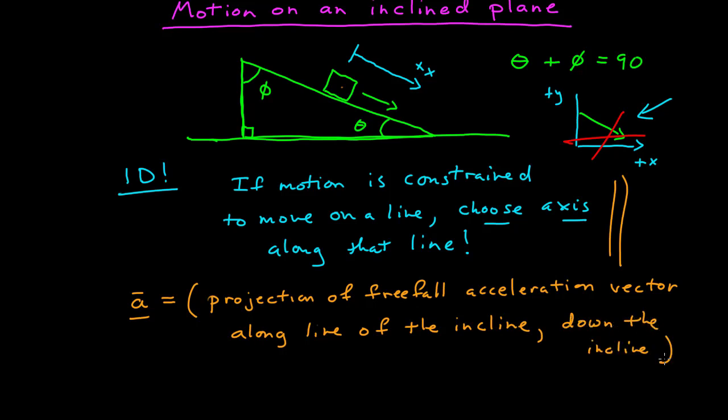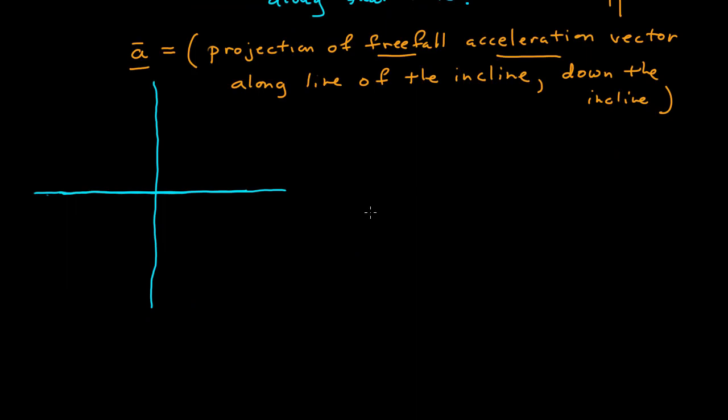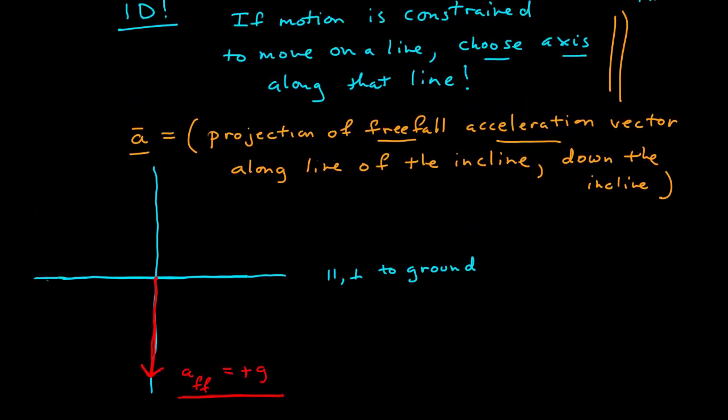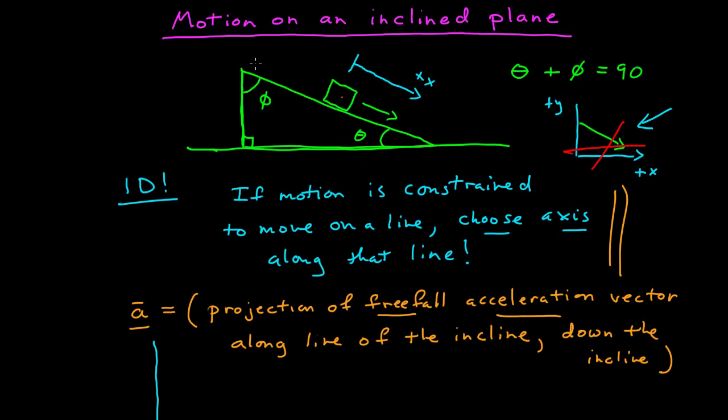Let's calculate the magnitude. This is now a coordinate system that's parallel and perpendicular to the ground. So this is the vector for the acceleration free fall. Its magnitude is g, and it's pointing in this direction. Now, I'm going to draw another coordinate system that's parallel and perpendicular along the line of my incline.